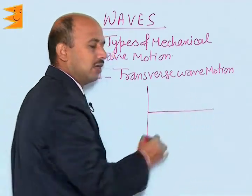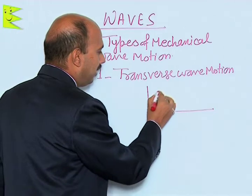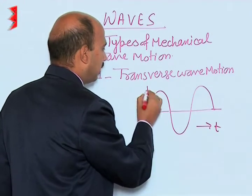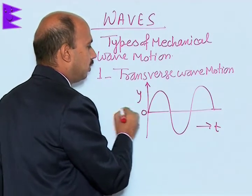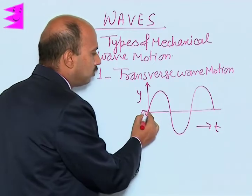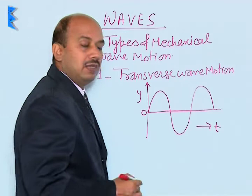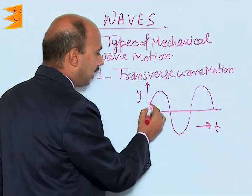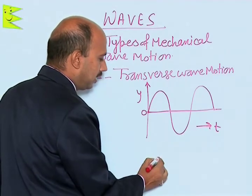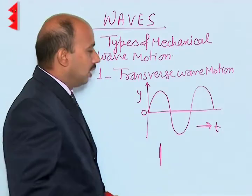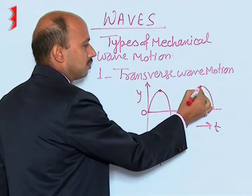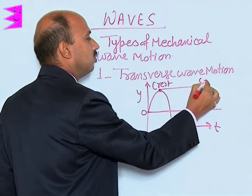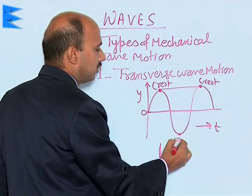If we take the equilibrium position of the particles, with time on the x-axis and displacement on the y-axis, the particles of the medium vibrate perpendicular to the direction of propagation of the wave. The wave propagates in one direction while particles vibrate up and down. The uppermost portions of the wave are known as crests and the lowest portions are known as troughs.